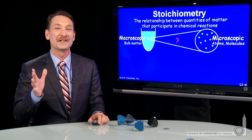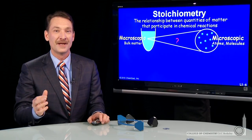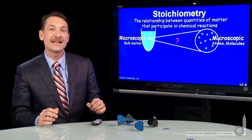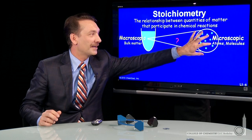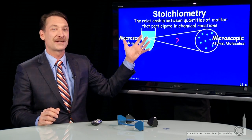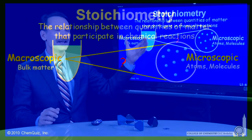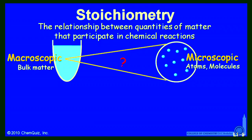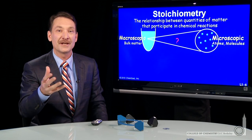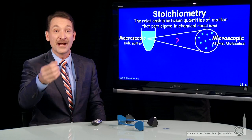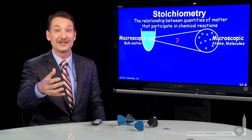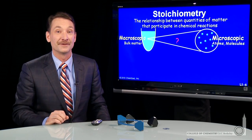When we perform chemical reactions in the laboratory, we need a way to get from the microscopic to the macroscopic. That is, from properties that we can measure, like mass and volume, and relate that to how many particles are actually involved. We need to know that because we write chemical reactions in terms of the particles involved.